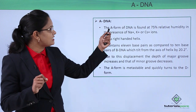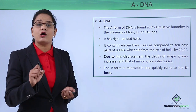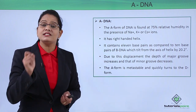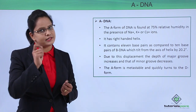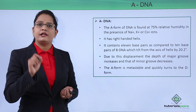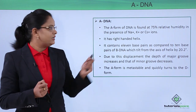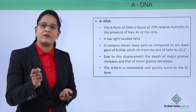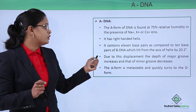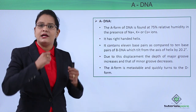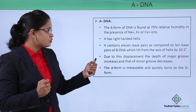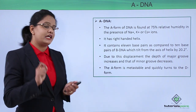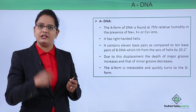Next is A-DNA, also a right-handed helix. It is found when humidity is around 75% and sodium, potassium, or cesium ions are present in excess. In A-DNA there are 11 base pairs per turn, and the tilt of the base pair from the axis is 20.2 degrees. Due to this tilt, the major groove becomes deeper while the minor groove becomes shallower. The A-form is a metastable form and quickly converts into the D-form of DNA.